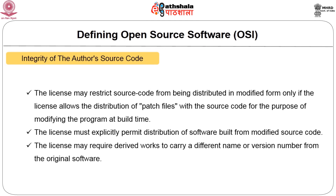The fourth point is integrity of the author's source code. The license may restrict source code from being distributed in modified form only if it allows distribution of patch files with the source code for the purpose of modifying the program at build time. Open source software is developed incrementally — there will be version 1, 1.1, 1.2, and so on — and patch files may be required in intermediate versions.